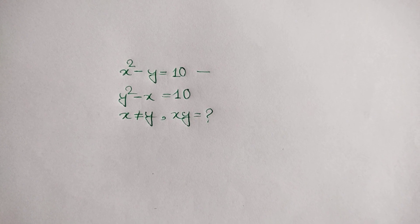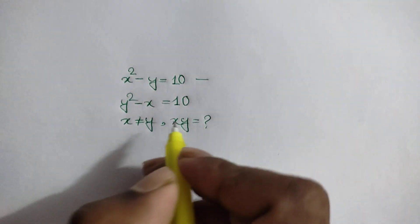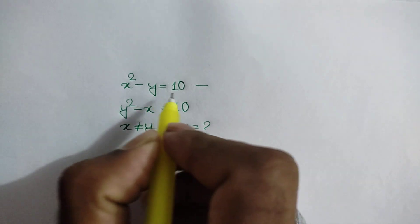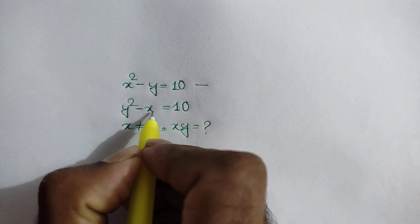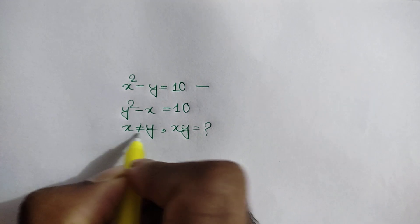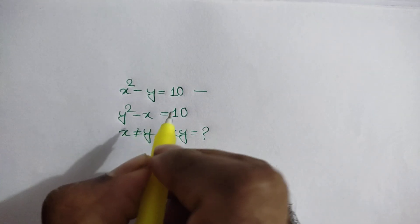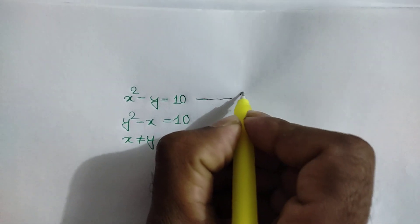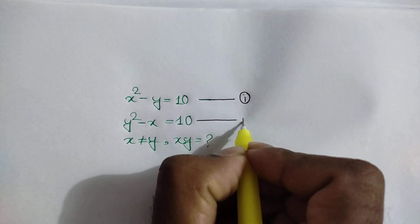Hi everyone. In this video I am going to show what is the value of x and y when x squared minus y is equal to 10 and y squared minus x is equal to 10, and x not equal to y. Let's call the first equation number 1 and the second equation number 2.